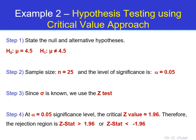The fourth step is to identify the critical values. Since the significance level is 5% and we are using a Z test, the critical value on the right is 1.96 and on the left is negative 1.96. The rejection region is beyond these two values: if the test statistic is greater than 1.96 or less than negative 1.96, we reject the null hypothesis. Any value between negative 1.96 and 1.96 is in the acceptance region.